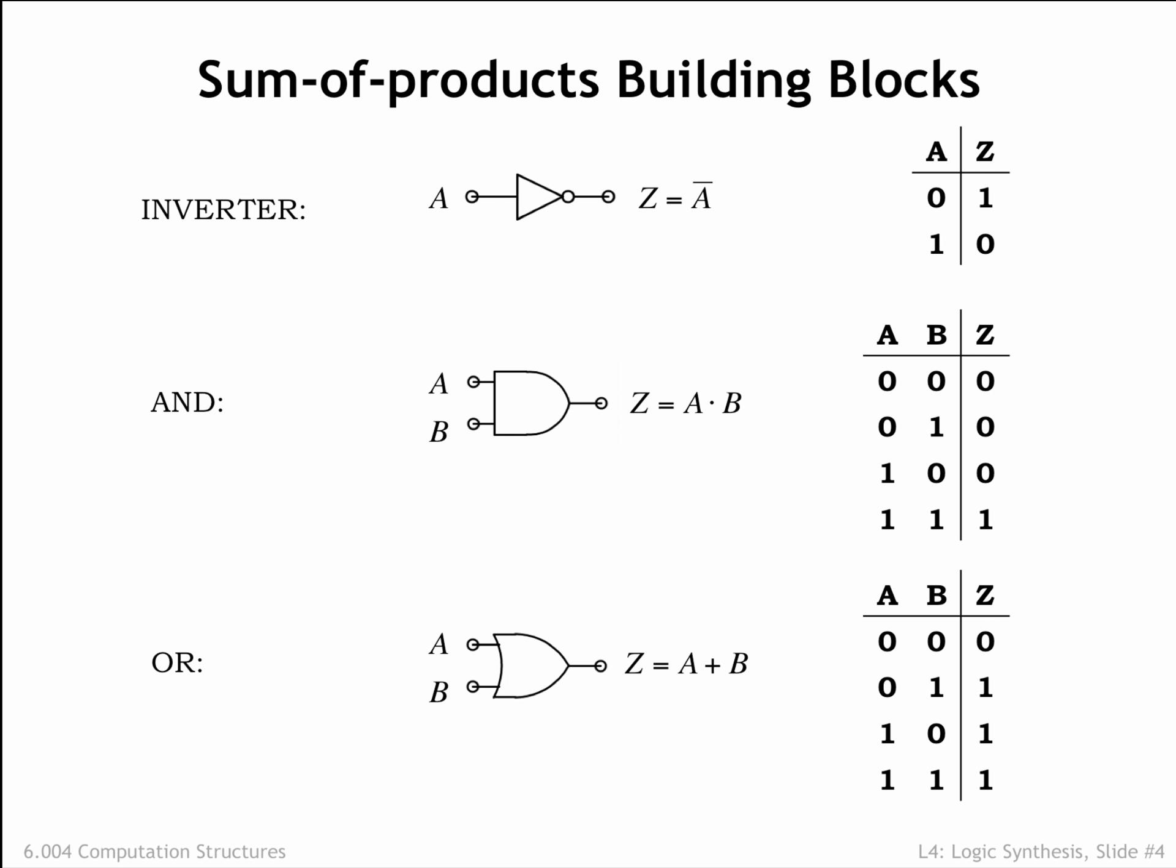These are the standard schematic symbols for AND and OR gates. Note that the AND symbol is straight on the input side, while the OR symbol is curved. With a little practice, you'll find it easy to remember which schematic symbols are which.